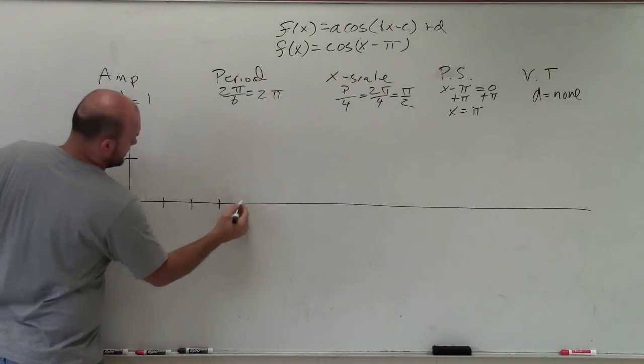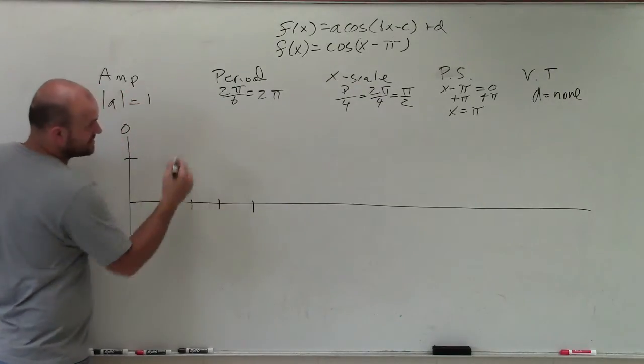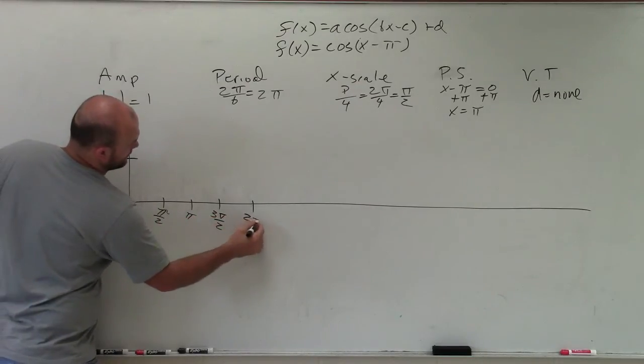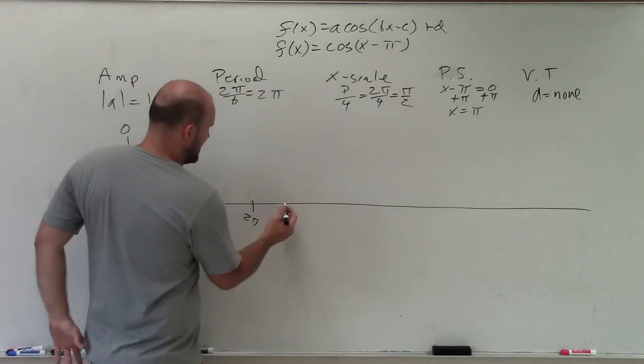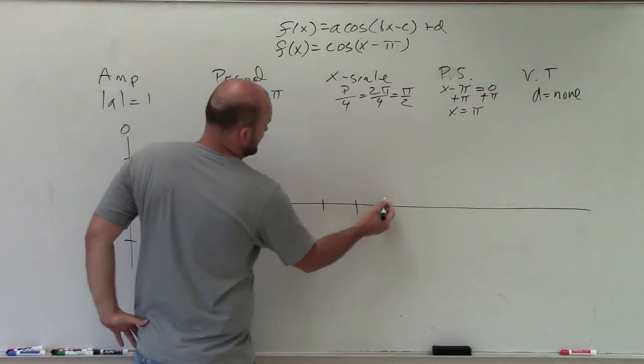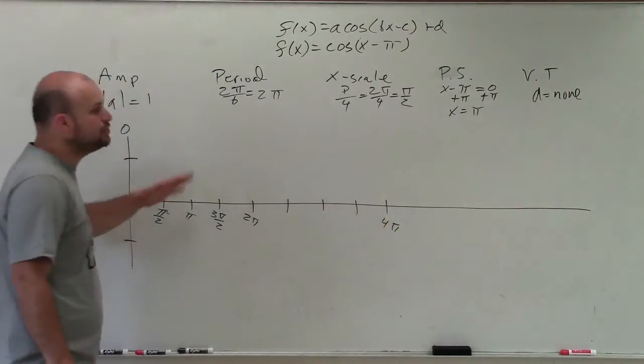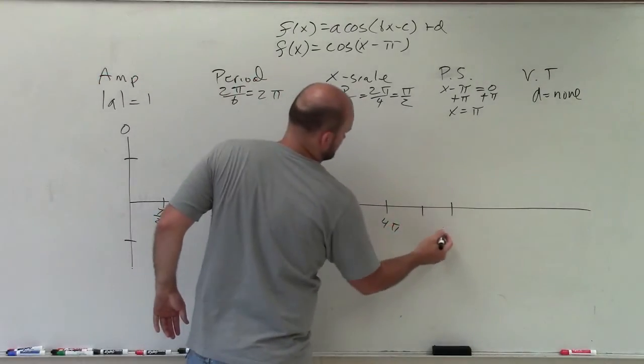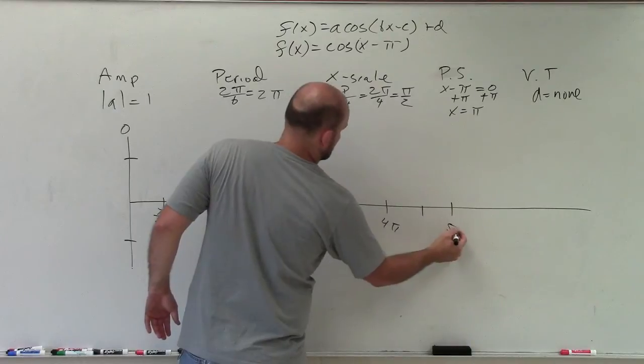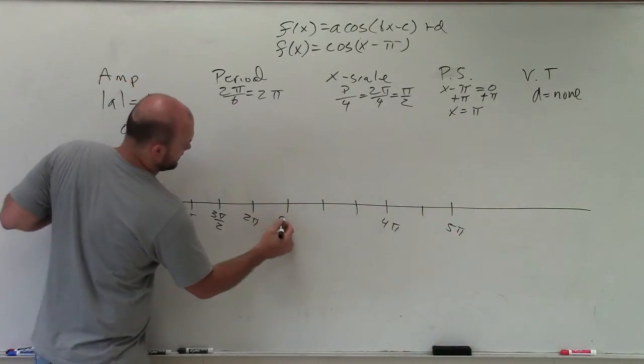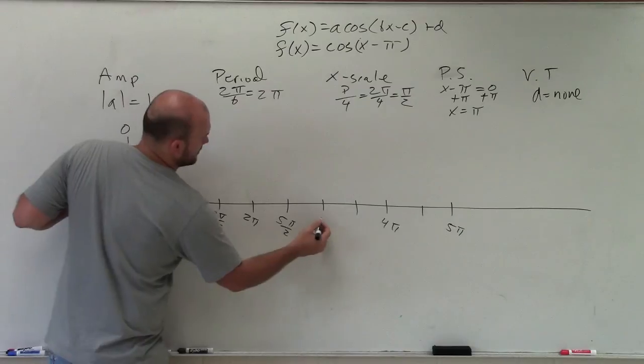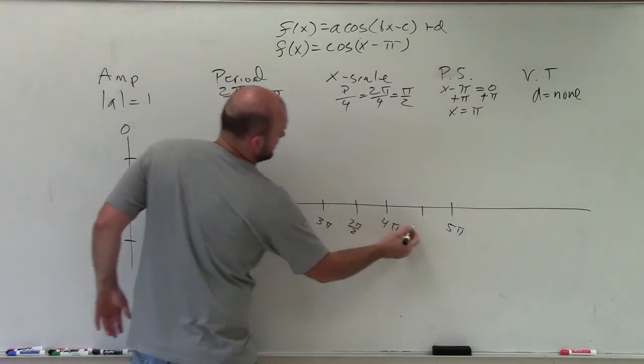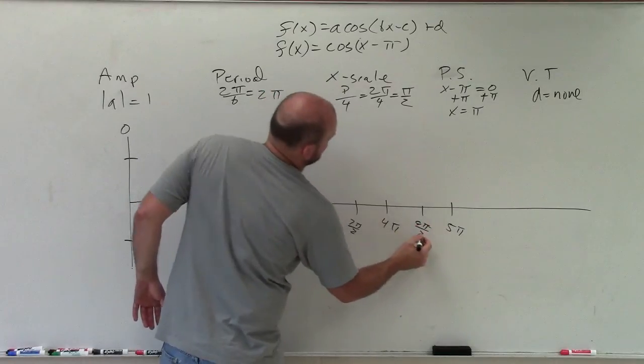Each x-scale is π/2 between each other. And then I can just continue this pattern: 1, 2, 3, 4. So that would be two periods. Labeling the axis: 3π, 4π, 5π, 6π, 7π, 8π, 9π.